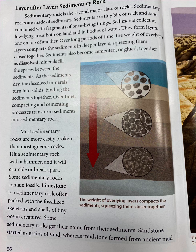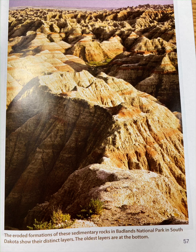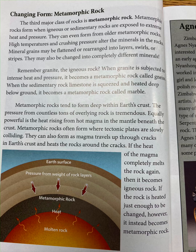Some sedimentary rocks contain fossils. Limestone is a sedimentary rock often packed with the fossilized skeletons and shells of tiny ocean creatures. Some sedimentary rocks get their name from their sediments — sandstone started as grains of sand, whereas mudstone formed from ancient mud. The eroded formations of sedimentary rocks in Badlands National Park in South Dakota clearly show their distinct layers, with the oldest layers at the bottom.